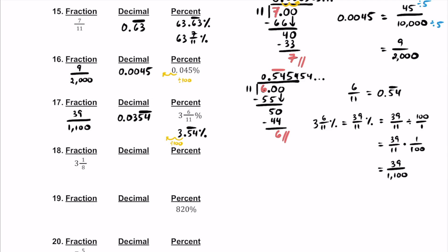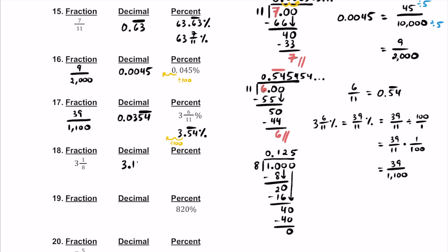For number 18, we have 3 and 1 eighths. So we know it's going to be 3-point-something because 3 is the whole number. If you haven't memorized 1 eighth as a decimal, I'll show you. 8 doesn't fit into 1, so add a decimal and a zero. 8 goes into 10 once; 1 times 8 is 8. 10 minus 8 is 2. Add another zero — 8 into 20 is twice; 2 times 8 is 16. Subtract and get 4. Add one more zero — 8 into 40 is 5 times; 5 times 8 is 40. Remainder of 0. So we have 3.125.